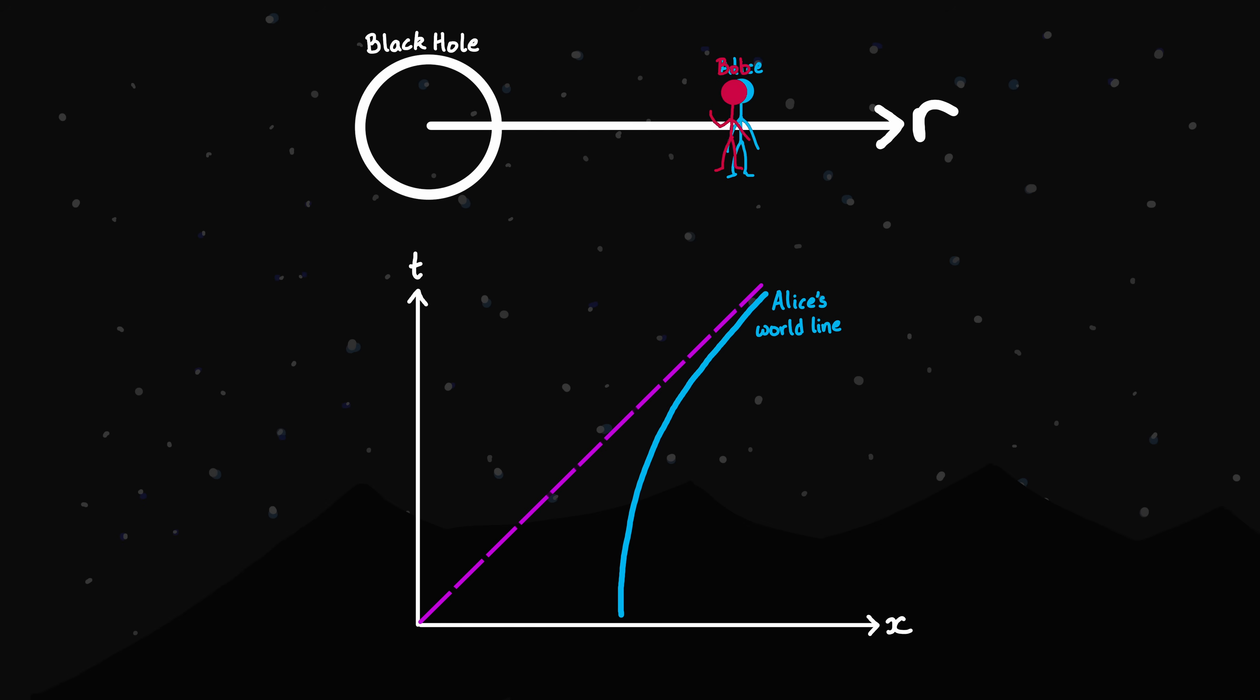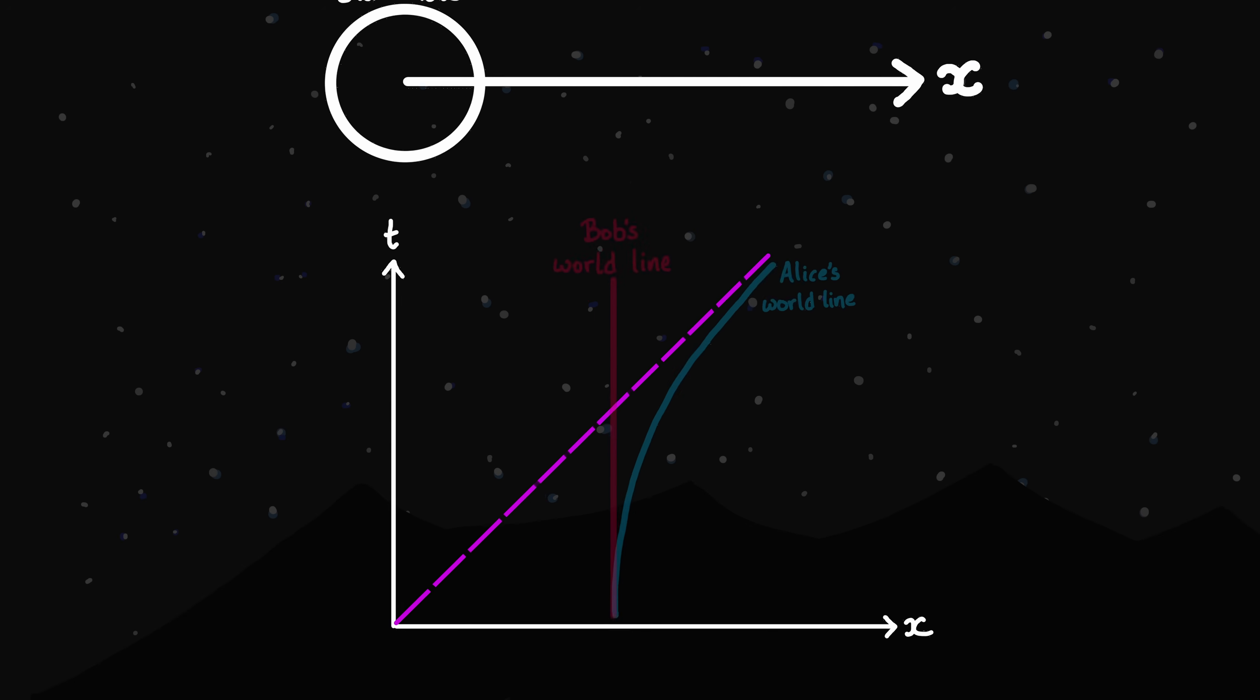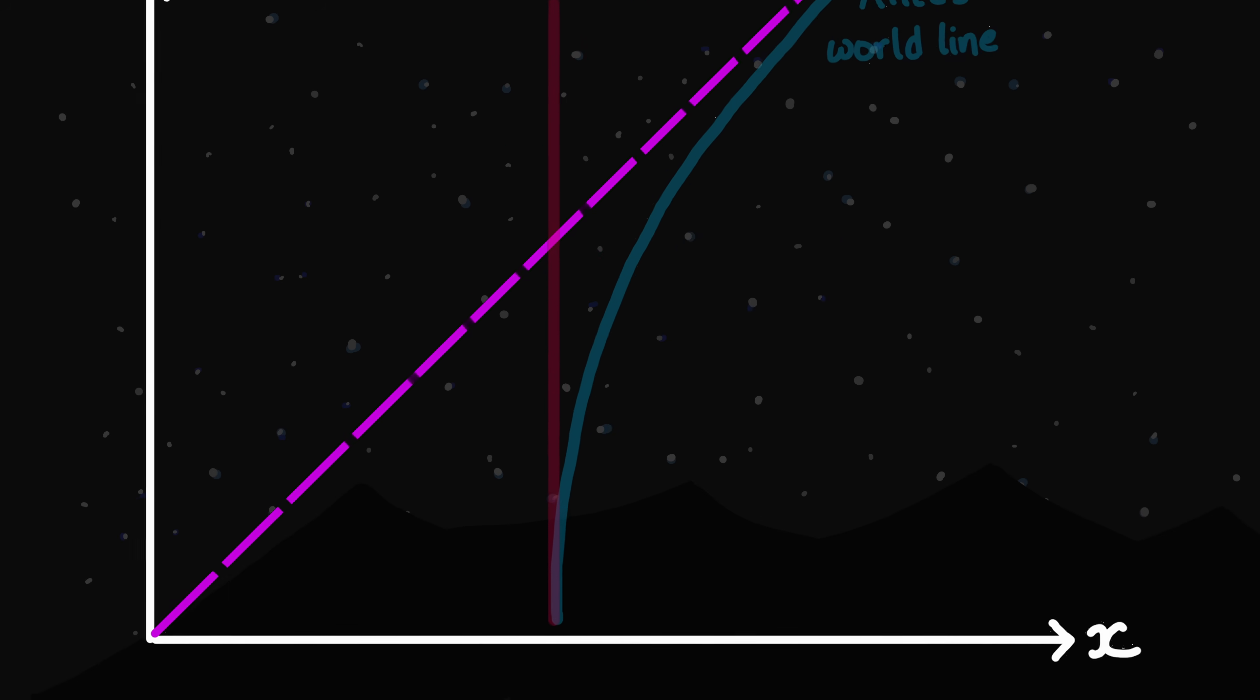Let's also say that our other friend Bob starts at the same place from our perspective, but unfortunately he falls into the black hole. He follows a different world line to Alice, crossing through our dotted line straight into the event horizon and beyond. We know that he can no longer send signals to Alice, or anyone outside the horizon for that matter, once he crosses. But let's see what happens in the moments leading up to the crossing.